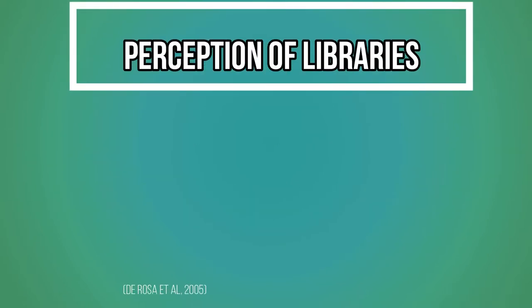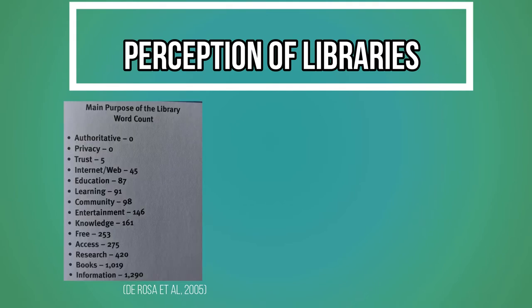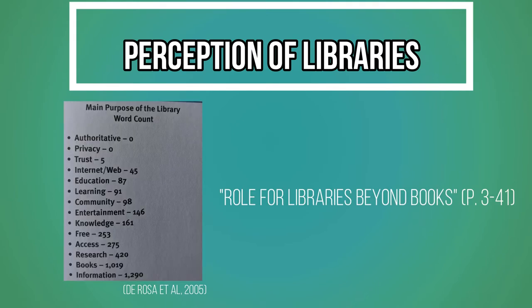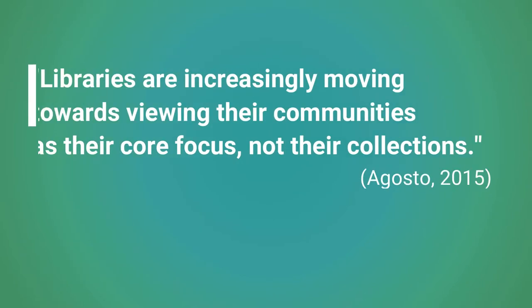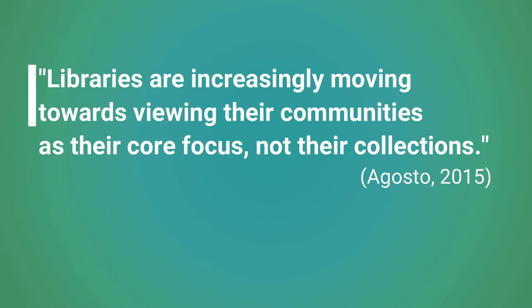Data from the report Perceptions of Libraries and Information Resources suggests that many online information consumers can see a role for libraries beyond books. Information is seen as the expanded role for libraries by the largest number of respondents. It's important to realize that libraries are not just books, because libraries are increasingly moving towards viewing their communities as their core focus, not their collections. Many definitions of a library revolve around the fact that it is constantly changing — it's dynamic and will continue to evolve.